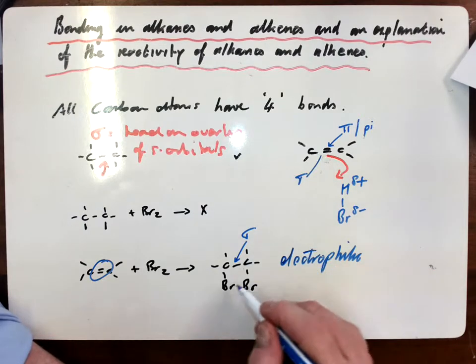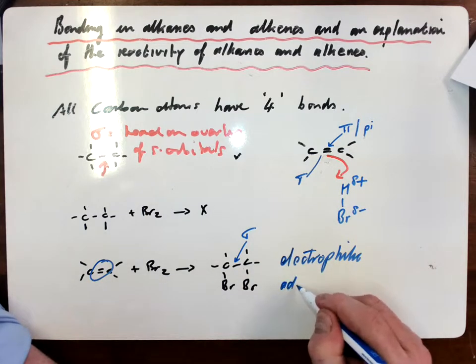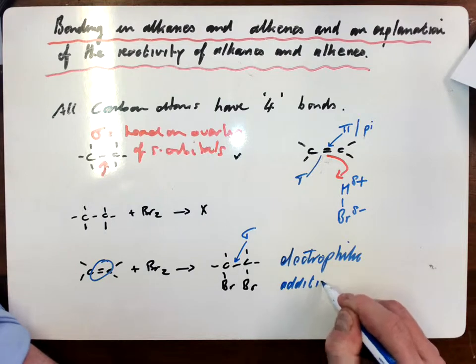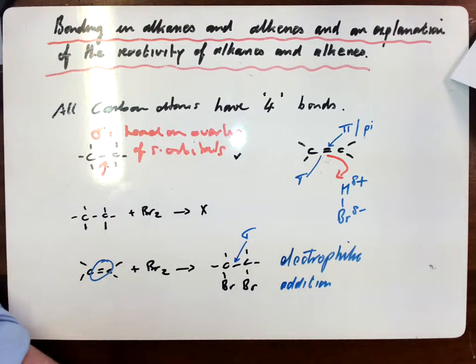Of electrophilic, because the bromine is acting as an electrophile and accepting a pair of electrons. And it is, of course, electrophilic addition because the bromine is being added across the double bond to the molecule.